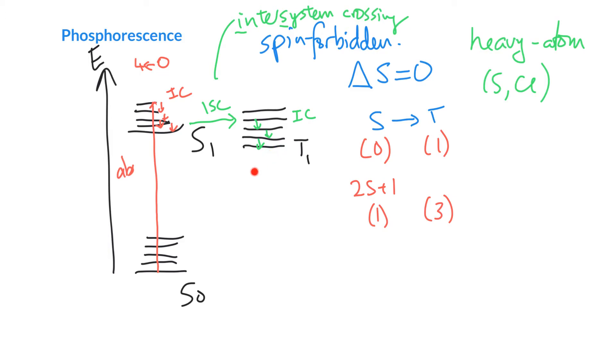So we're stuck in this triplet state here. Again, crossing the spin manifolds from triplet to singlet is forbidden. And so it turns out that it hangs out here for an awful long time, and then it can cross back down. And so when it crosses back down, that's called phosphorescence.